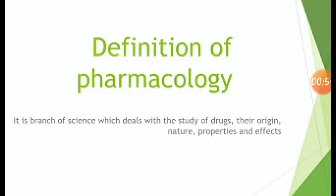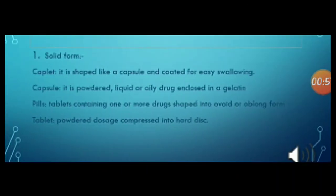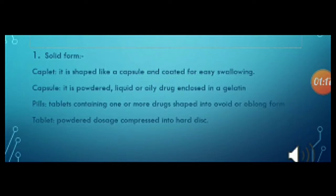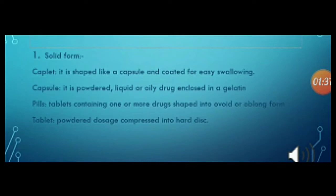Now let's learn about the classification of a drug by form. The first is solid form, which contains four subtypes: caplet, capsule, pills, and tablet. A caplet is shaped like a capsule and coated for easy swallowing. A capsule is a powder, liquid, or oily drug enclosed in a gelatin shell. Pills are tablets containing one or more drugs shaped into an ovoid or oblong form. A tablet is a powder dosage compressed into a hard disk.